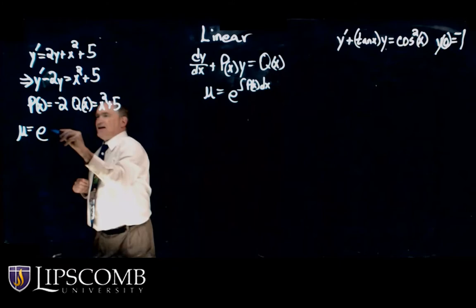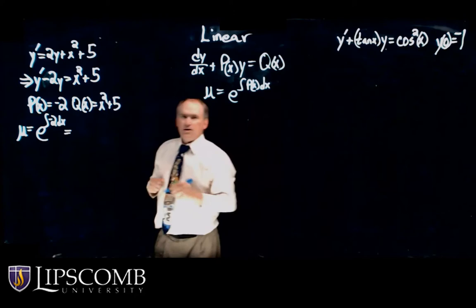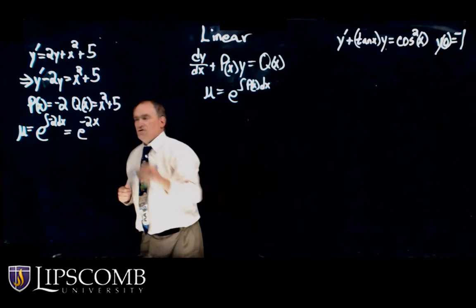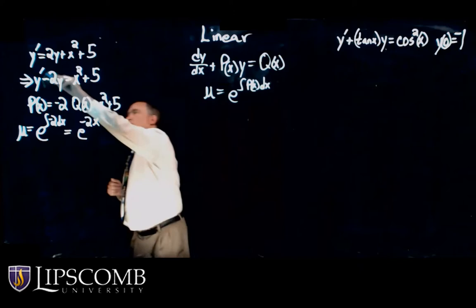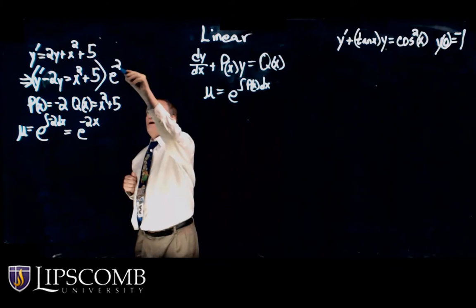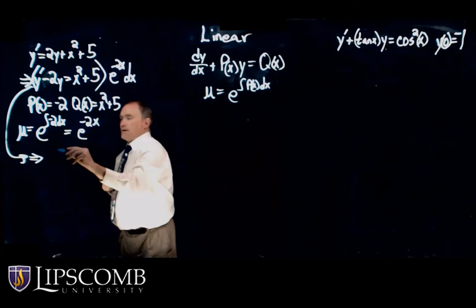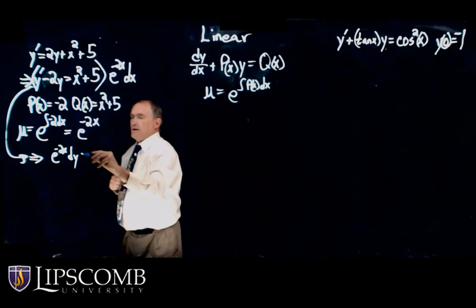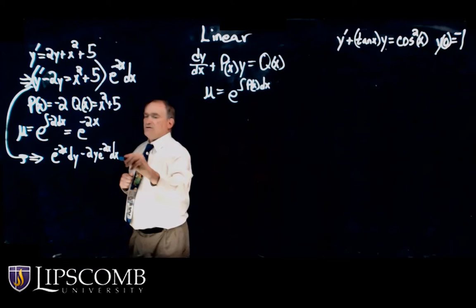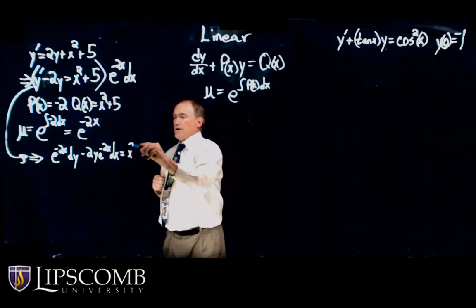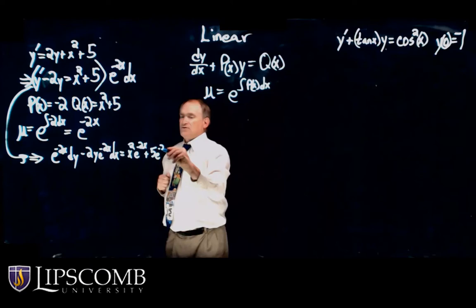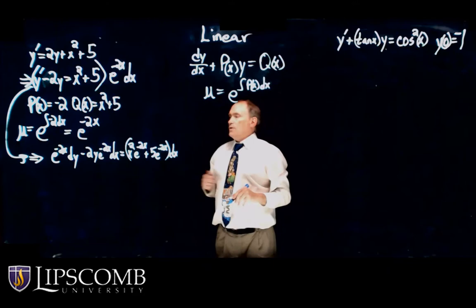So now I want to create my integrating factor μ. That would be e to the integral of minus 2 dx, which is easy to integrate — so I get e to the minus 2x. I'm going to multiply this whole differential equation by e to the minus 2x, and go ahead and multiply by dx. So I get e to the minus 2x dy minus 2y e to the minus 2x dx on the left side, and x squared e to the minus 2x plus 5 e to the minus 2x, all times dx, on the right.